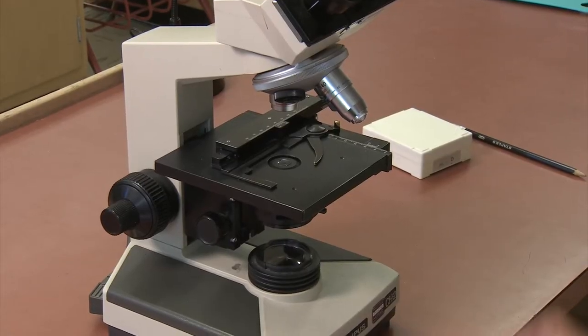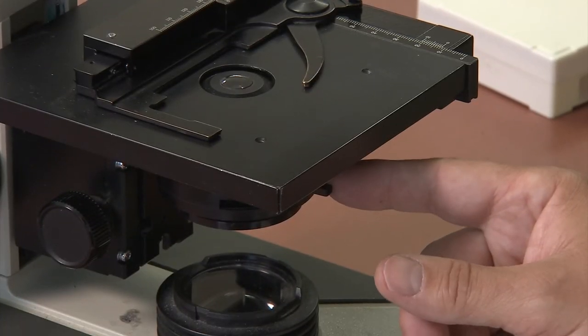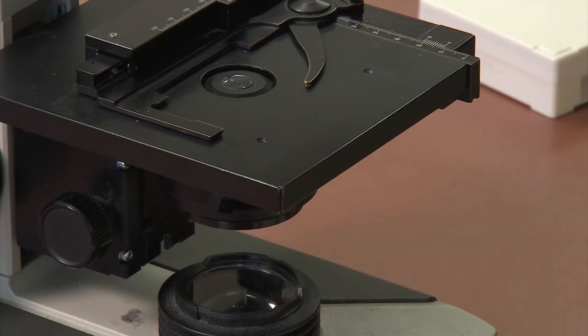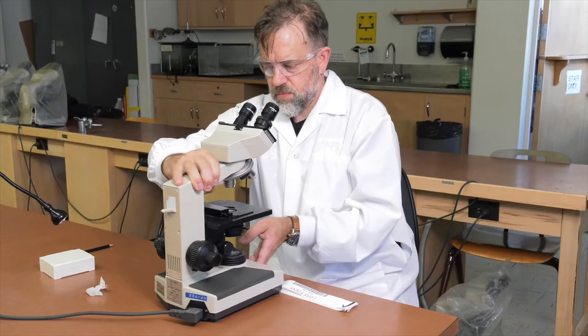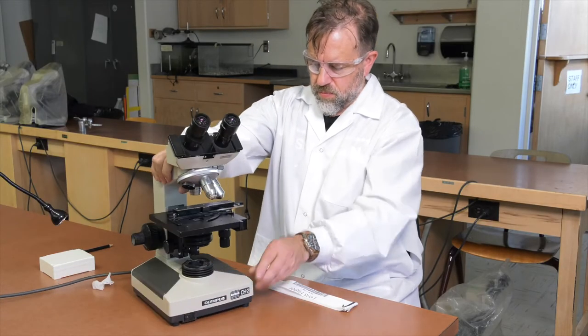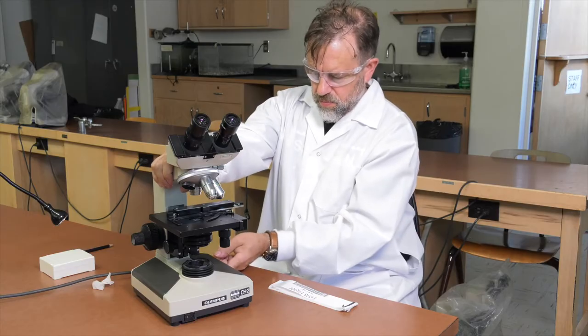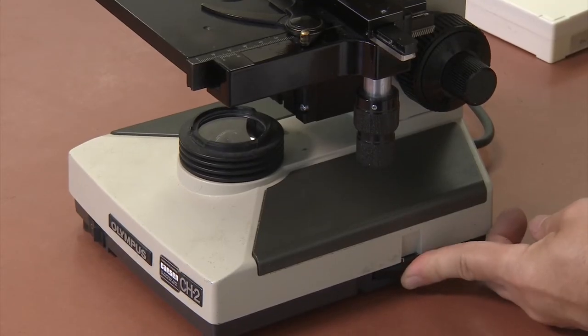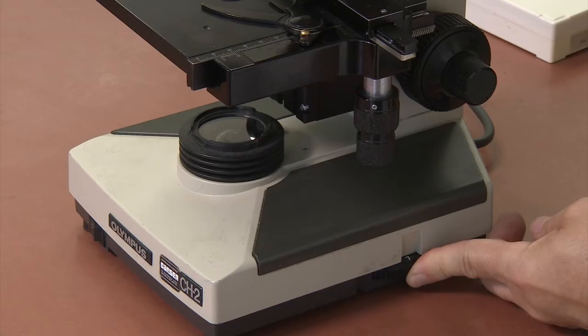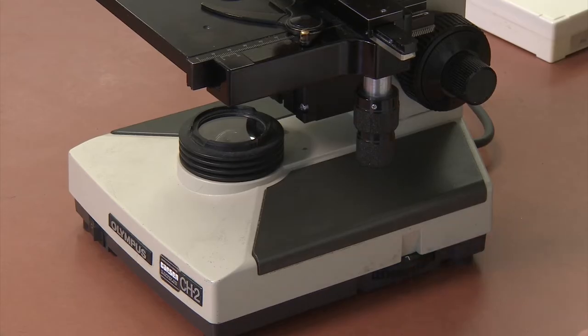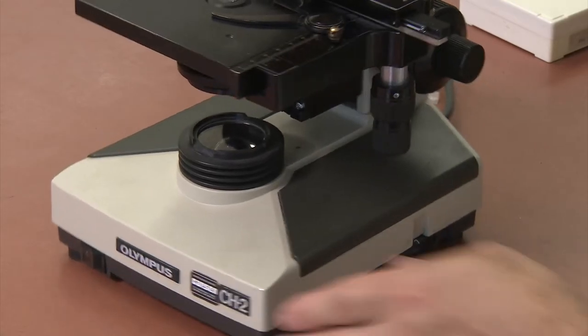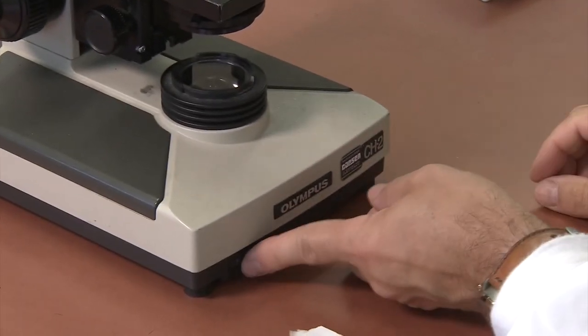Open the iris diaphragm by moving the adjustment lever completely to the side. If you are using an Olympus model CH or CH2, adjust the light intensity control to 7. If you are using an Olympus model CH30, set the intensity to 3.5. Turn the power switch on.